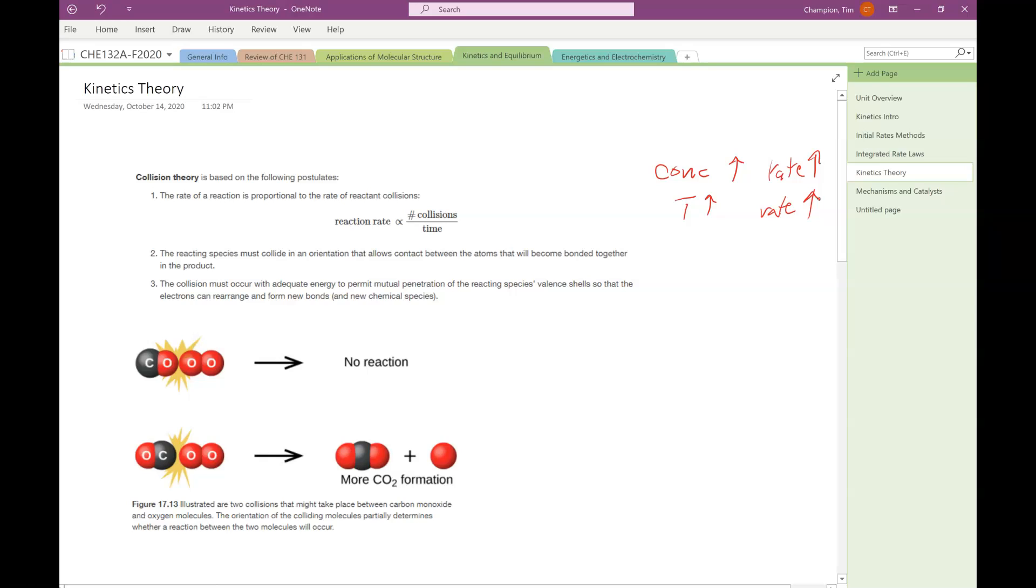The rule of thumb is that if you increase the temperature of reaction 10 degrees Celsius, the rate doubles. We saw back in the gas law chapter how the motion of gas particles depended on temperature, and that's true of motion of particles in solution as well.